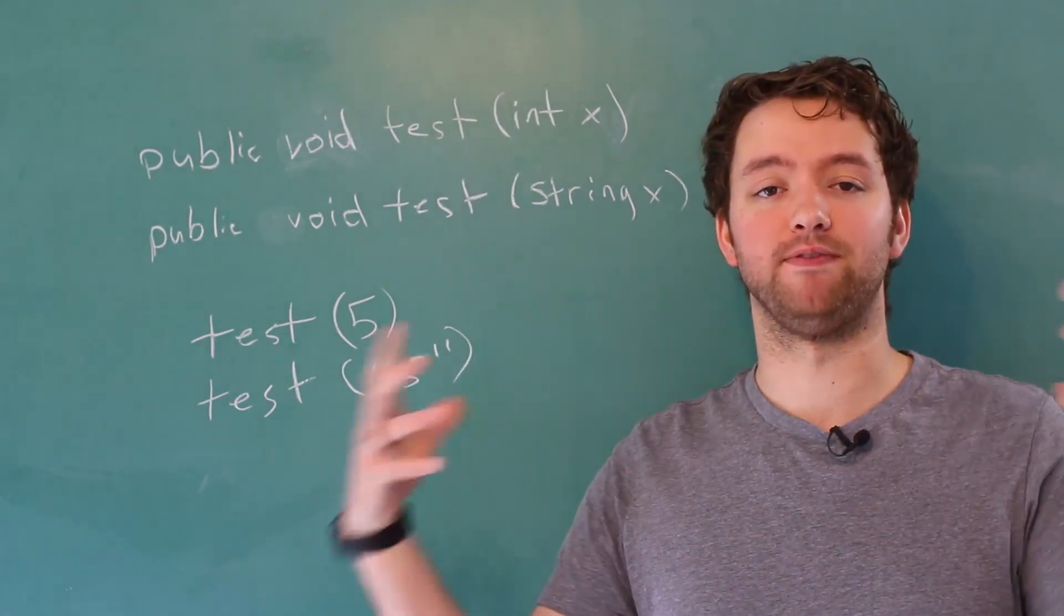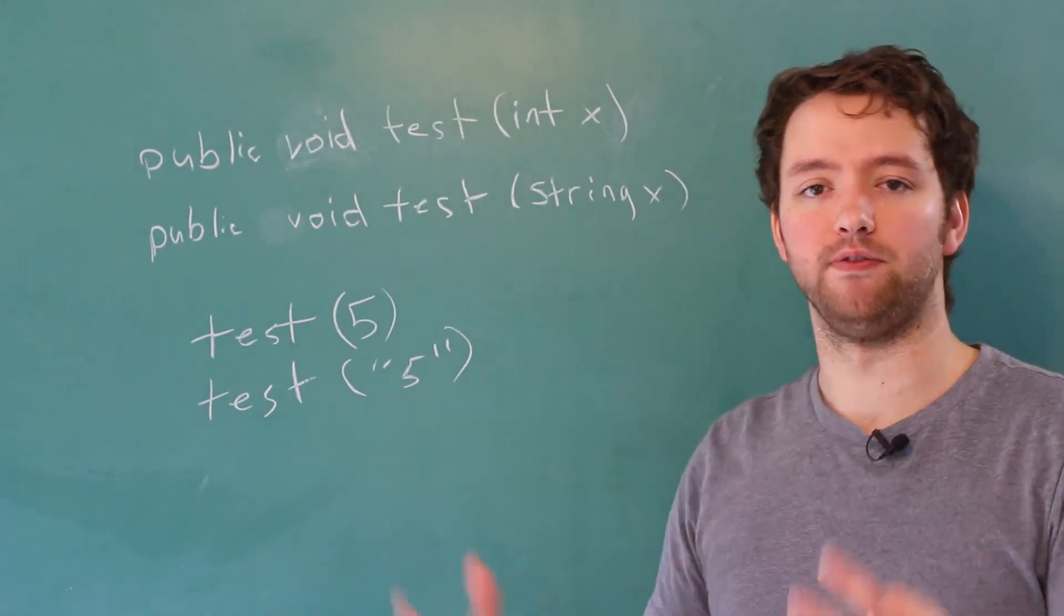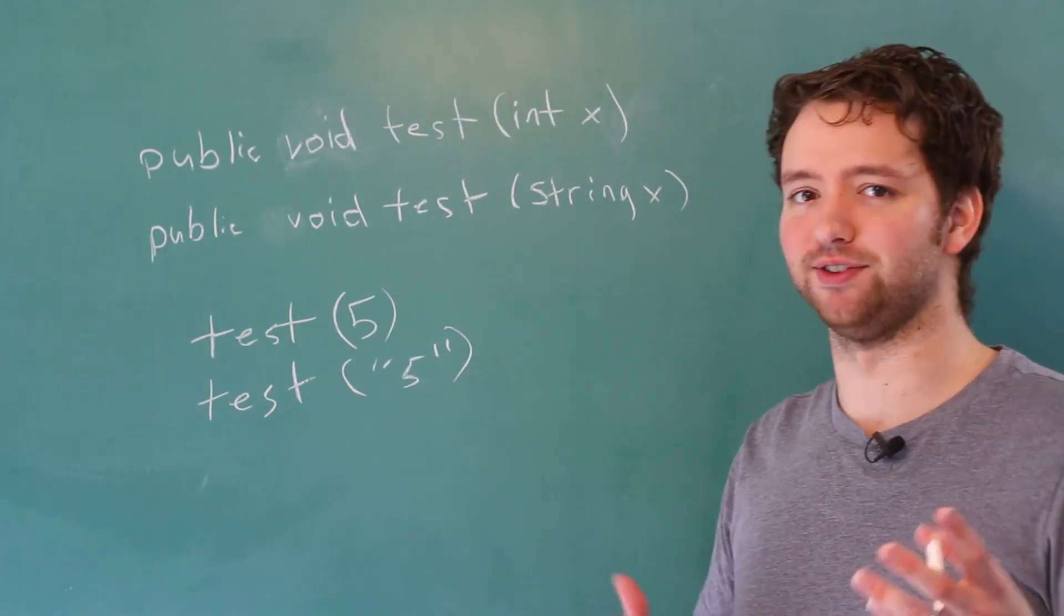So although the body of the methods might be very similar, the different inputs allow for the method to be more general. It allows it to accept various inputs and still function. Still function, that's kind of funny because methods are functions.